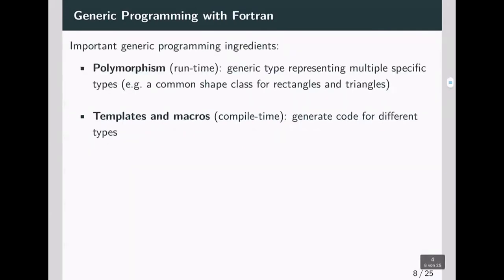What are important generic programming ingredients? First there is runtime polymorphism, which means that you have a generic type that represents multiple specific types. A common example is a shape class that can be specified by a rectangle or triangle type. The second ingredient is templates and macros, also called compile time polymorphism. This means that you generate code for different types so that you generate different specific implementations for different data types.